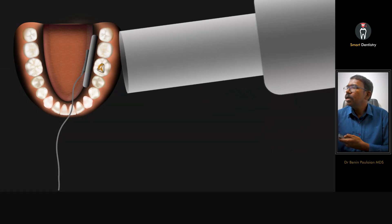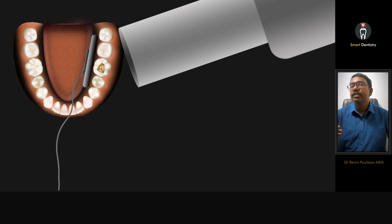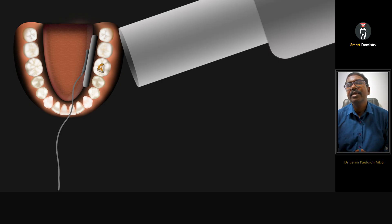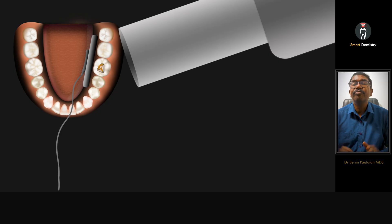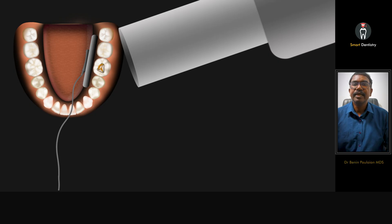Can we use a distal angulation instead of a mesial angulation? Yes, obviously. With a distal angulation, the canal present on the distal side will be the lingual canal. So wherever the angulation is given, the canal on the same side as the angulation is lingual. For endodontic radiography, mesial angulation is much more helpful compared to distal angulation. Distal angulation is helpful to differentiate between MB1 and MB2 in the case of a maxillary first molar, but in most clinical situations mesial angulation is the most useful.